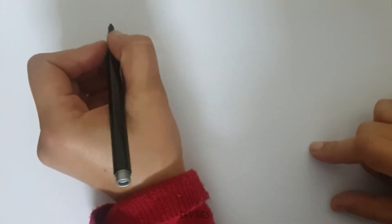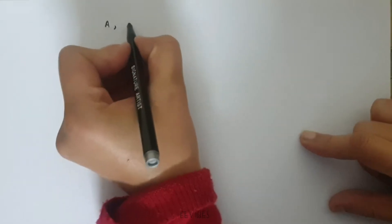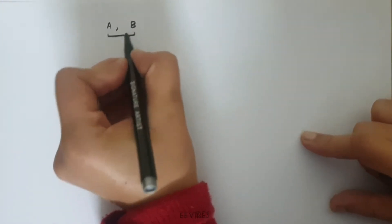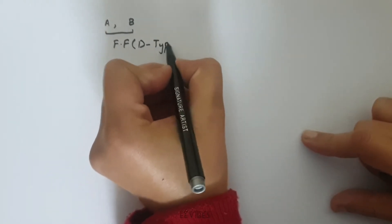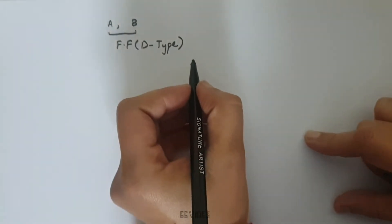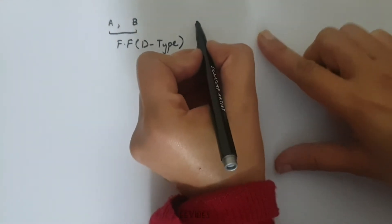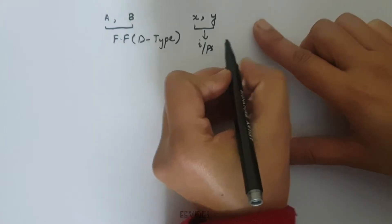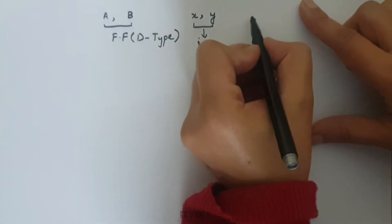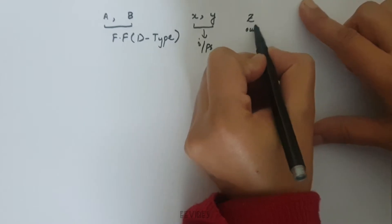Hi guys, this is Asma Mushtaq from the WIPS. In this lecture I'll solve an end problem of chapter 5.6 of the Morris Mano, where you have to design a sequential circuit with two D flip-flops A and B. These are the flip-flops and they are of D type. You are having two inputs X and Y, and at the end only one output is given, that is Z.